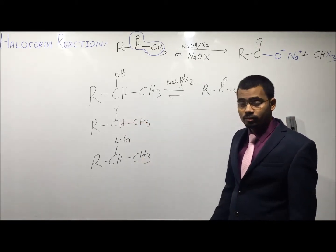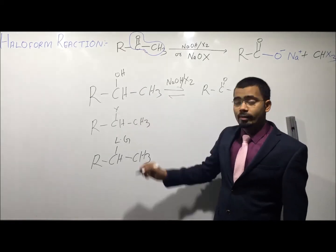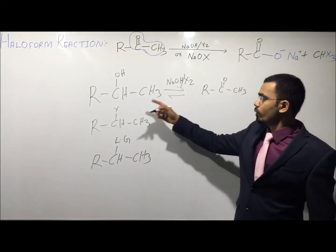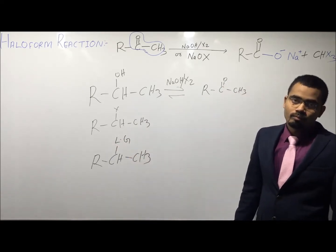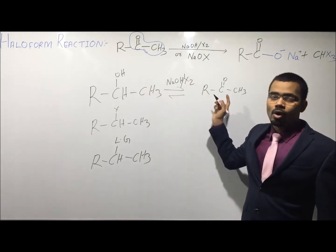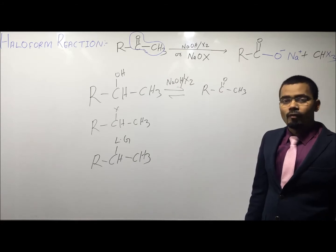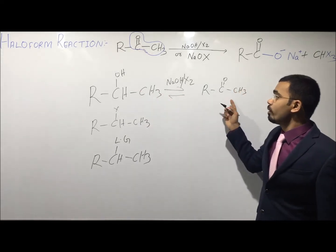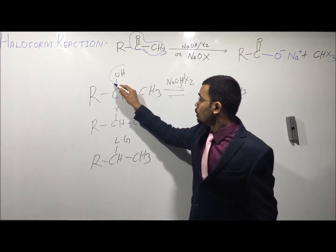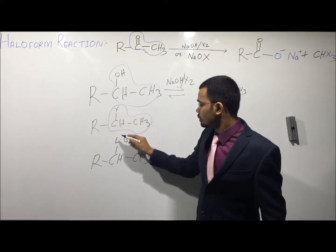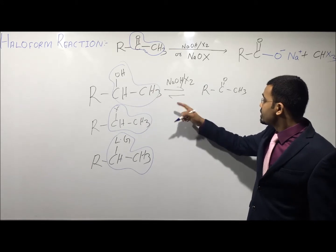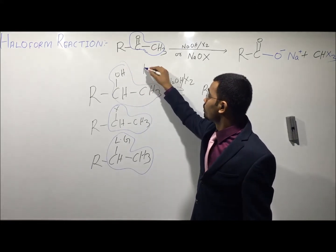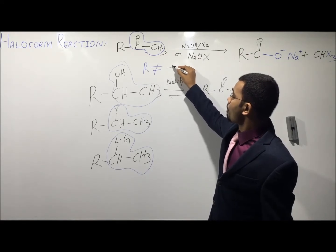Now, this is the halide in the presence of alcohol. This will be converted into an alcohol, and the alcohol is further oxidized to give the methyl ketone. At the place of X, if there is any leaving group, it will further convert into an alcohol and then oxidize to give the haloform reaction. So the haloform reaction is given by either a methyl ketone or compounds which are easily convertible into methyl ketone. Here, R should not be halogen.